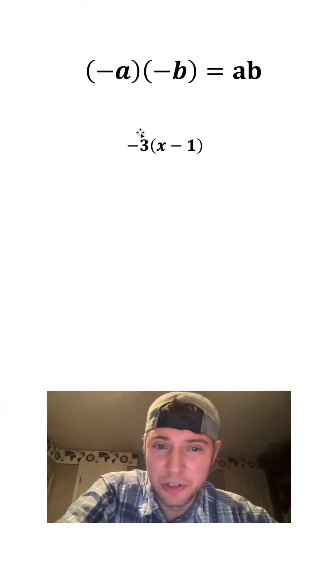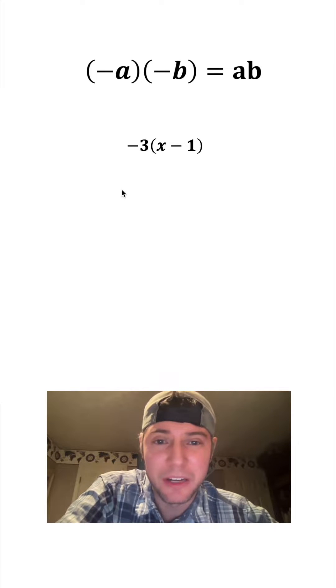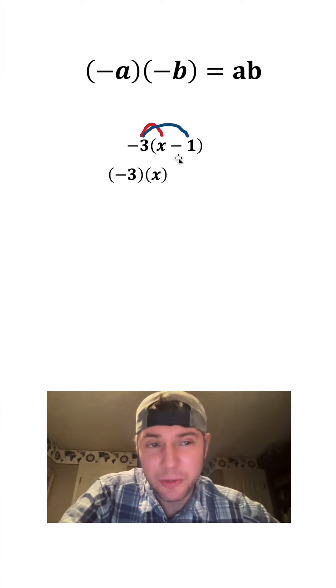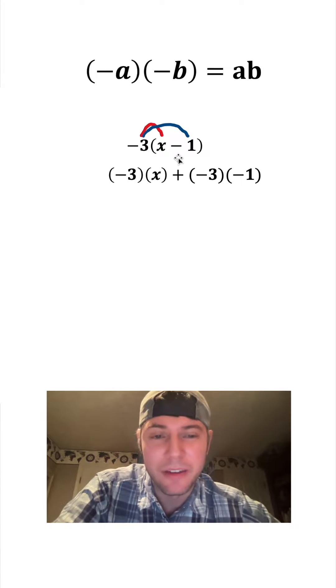First, let's do a quick review of distribution. If I have negative 3 times X minus 1, I want to distribute this negative 3 to the X, which would give me negative 3 times X. And I also want to distribute it to the negative 1, which would be negative 3 times negative 1.